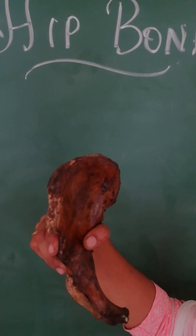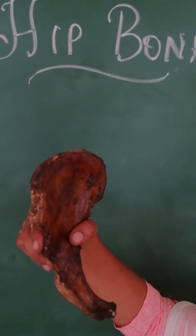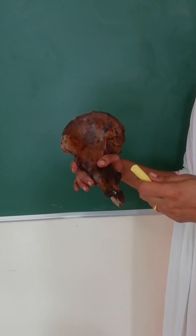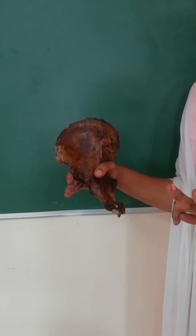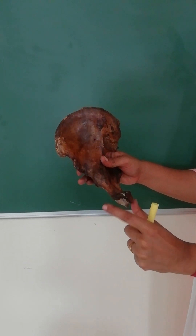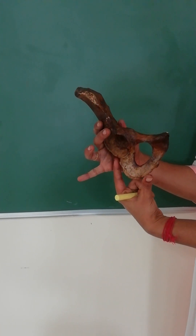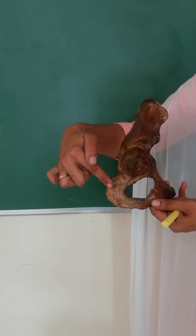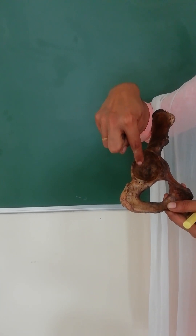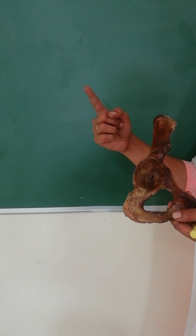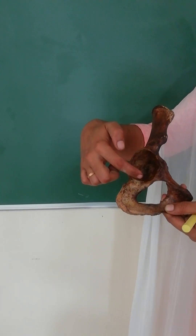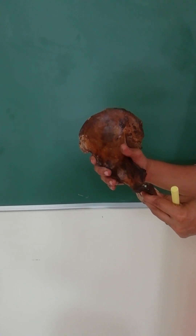Now we will go through the features of all three parts of the hip bone in detail. The upper part is the ilium, the anterior lower part is the pubis, and the posterior lower part is the ischium. All three bones join together in a cup-shaped cavity called the acetabulum, similar to the glenoid cavity in the upper limb. The acetabulum contributes to the hip joint.